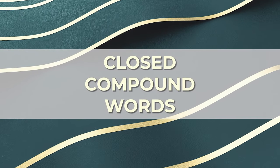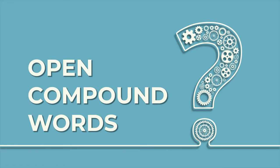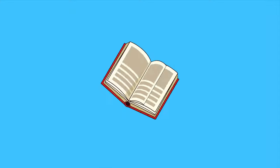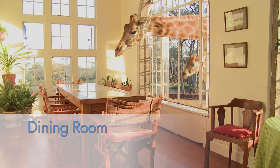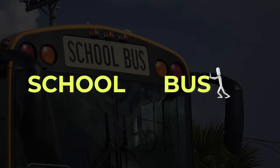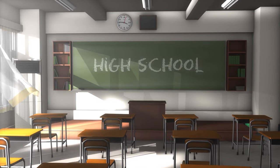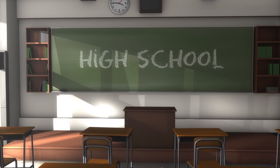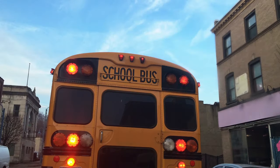Closed compound words have no spaces between the two words. So if a closed compound word has no spaces, can you guess what an open compound word has? Spaces, of course! Open compound words are separate words that, when put together, create a new word and meaning. The words high and school have separate meanings, and when you put the two words together to create the compound word high school, it also means something different. It's the same with the words dining room and school bus — together, those words mean something different than they do separate.